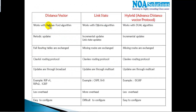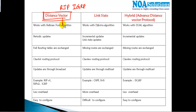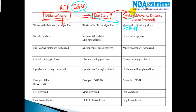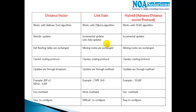The first category introduced in dynamic routing was distance vector — RIP was one of the first protocols, along with IGRP from Cisco. There are some major drawbacks with distance vector protocols, which led to the next version: link state protocols. Cisco then modified IGRP and released EIGRP, which we call hybrid or advanced distance vector protocols.